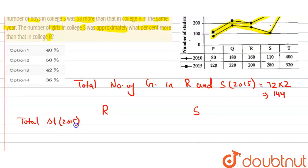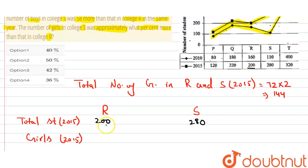Total students in 2015: R has 200 students and S has 280 students. Let girls in college R = x. Then girls in college S = 144 − x, since total girls in both colleges is 144.